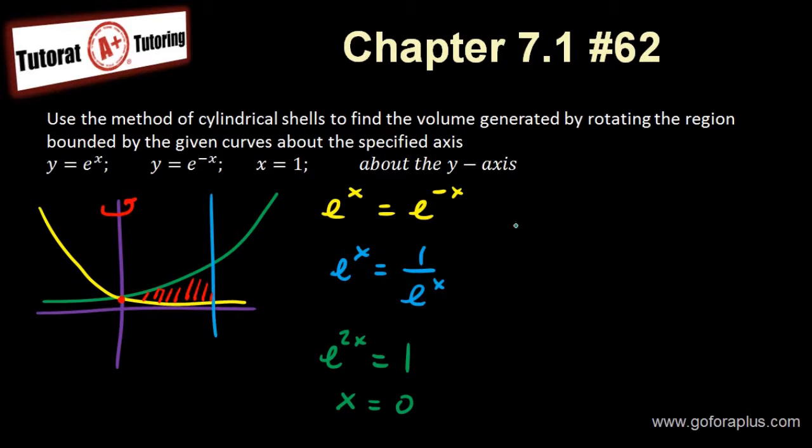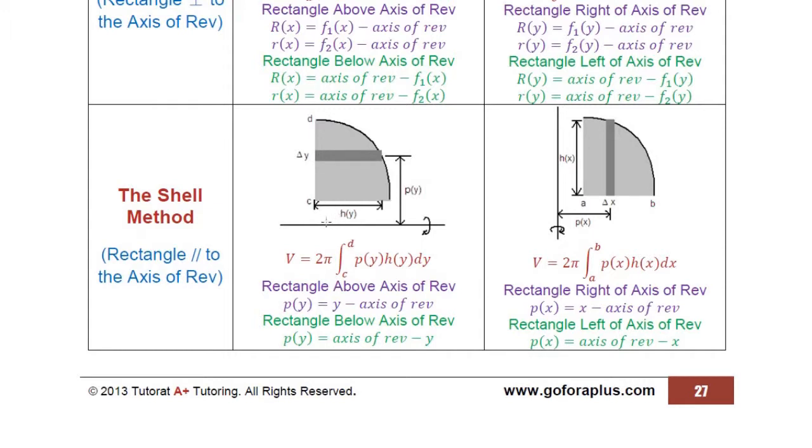So I know that my integral volume is equal to 2 pi, because that's the shell method, from 0 to 1. If you look at my notes, the shell method, the rectangles are parallel to the axis of revolution.